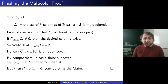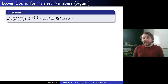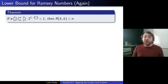Now we'll turn to our third topic: lower bounds for Ramsey numbers. We're doing this again because we've been improving the bound step by step — first with the basic probabilistic method, then alteration to improve it, and now the Local Lemma to improve it again. Namely, we'll show that if e · C(k,2) · C(n−2, k−2) · 2^(1−C(k,2)) < 1, then the Ramsey number R(k,k) > n.